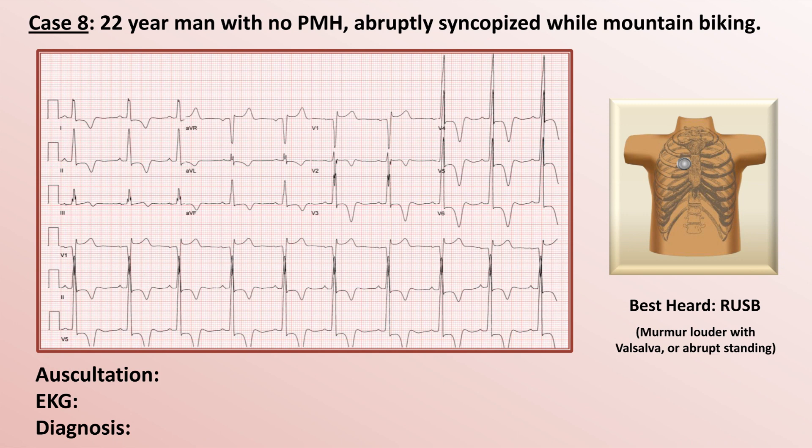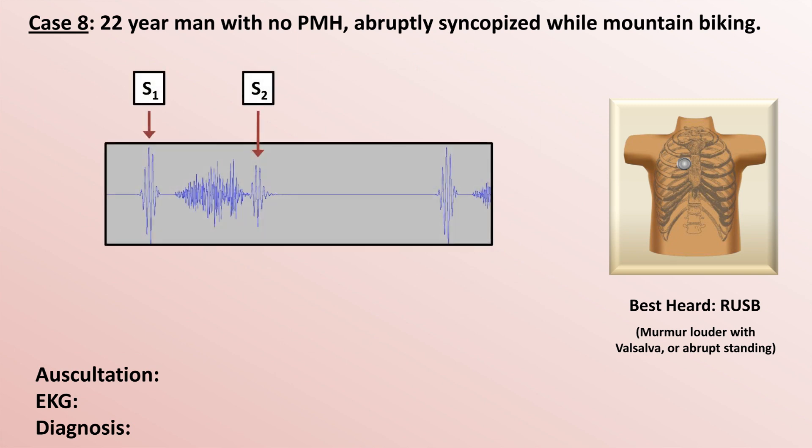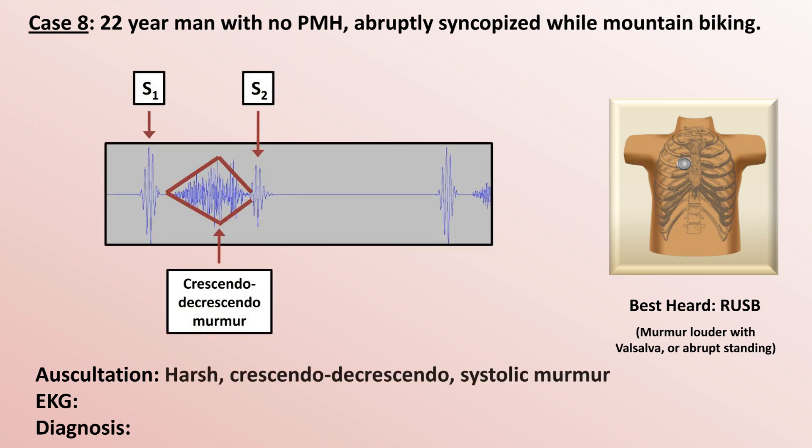Case 8: a 22-year-old man with no past medical history who abruptly syncopized while mountain biking. This murmur is best heard at the right upper sternal border and is made louder when the patient either performs a Valsalva maneuver or abruptly stands.